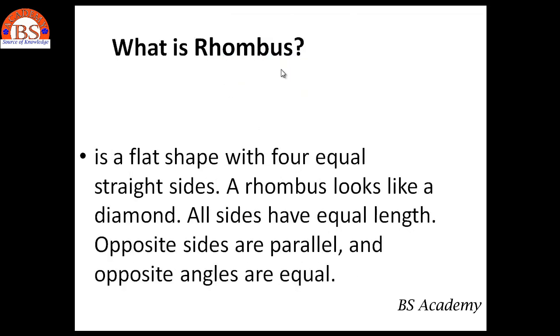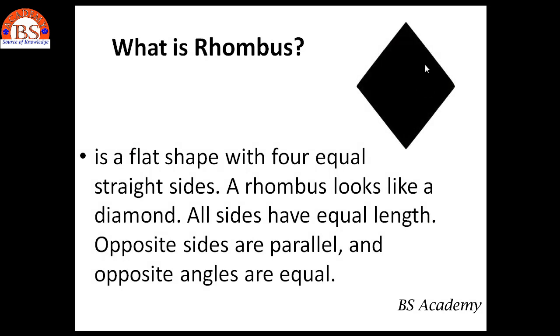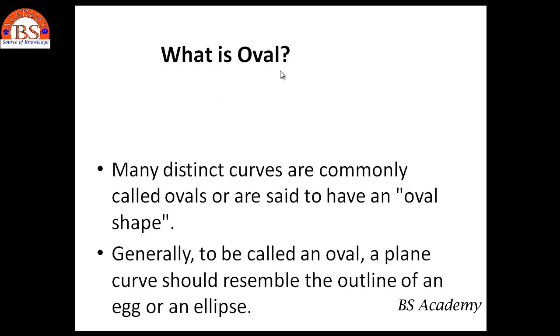And the next comes of rhombus. What is rhombus? It is a flat shape with four equal straight sides. A rhombus looks like a diamond. All sides have equal length. Opposite sides are parallel and opposite angles are equal.